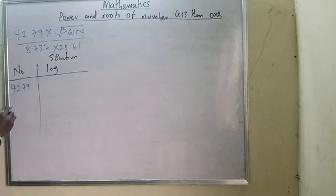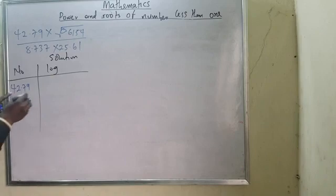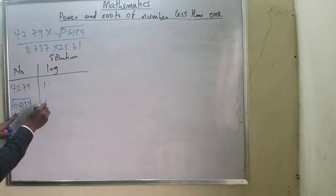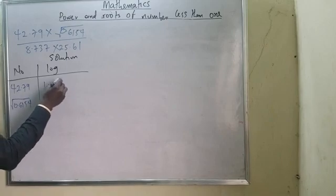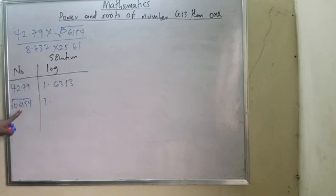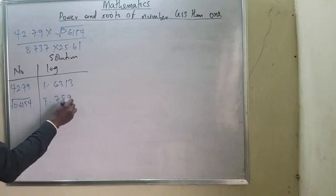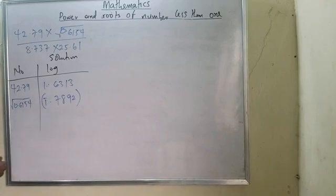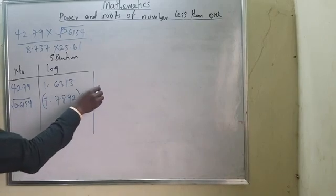First I deal with the numerator. For 2.78: characteristic is zero point, and for root of 0.6154: characteristic is bar 1 point. Looking up 42 under 7, difference 9 gives 6313. For 0.6154: look up 61 under 5, difference 4, giving 4892. Since it is a square root, this will be divided by 2.